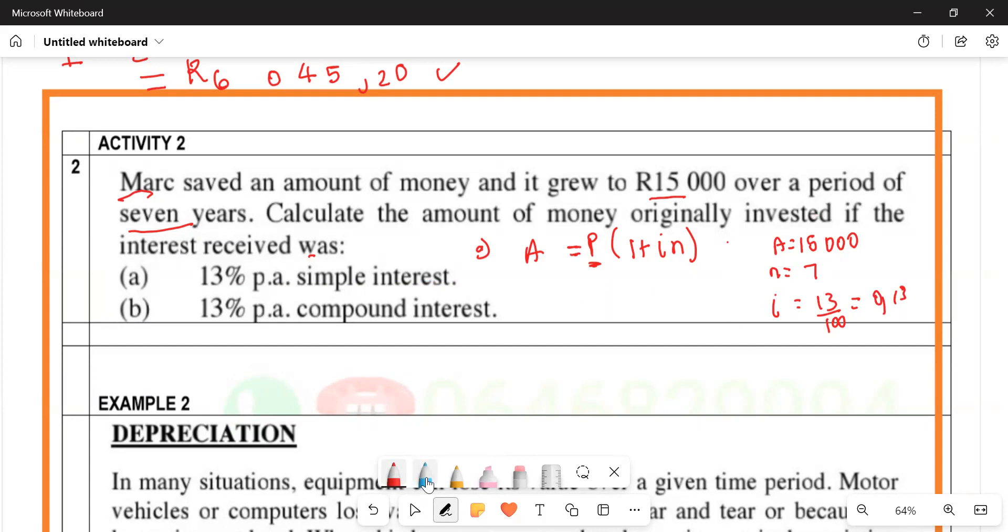Let's substitute. So I'm going to say 15,000 equals P times one plus 0.13 multiplied by seven. Then we divide both sides by one plus 0.13 multiplied by seven.